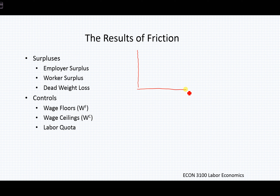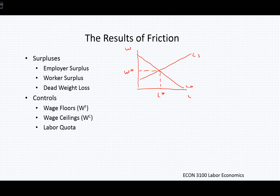Let's assume we have a basic labor market with a labor supply and a labor demand, giving us some W-star and some L-star. If W-star is low enough to be unacceptable in our economy, a policymaker may set a minimum wage or wage floor — a level below which we don't want the wage to fall — set above W-star. There's no reason to put it at or below W-star, because the endogenous supply and demand influences will keep the wage at W-star anyway.